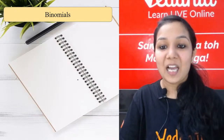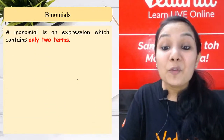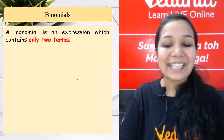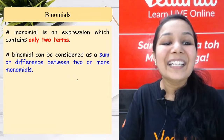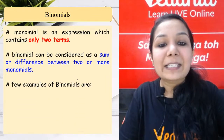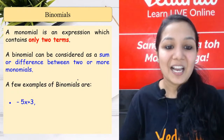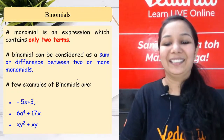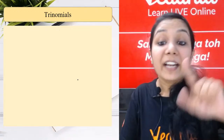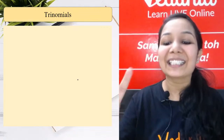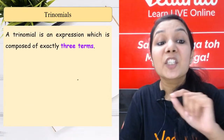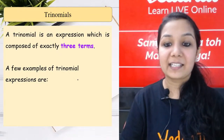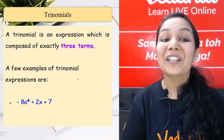A binomial has two terms. You can tell by seeing one plus or minus sign in between the terms - that means there are two terms, so we call it a binomial. A trinomial has three terms - just like a tricycle has three wheels. Any expression which has two plus or minus signs in between will have three terms, making it a trinomial.